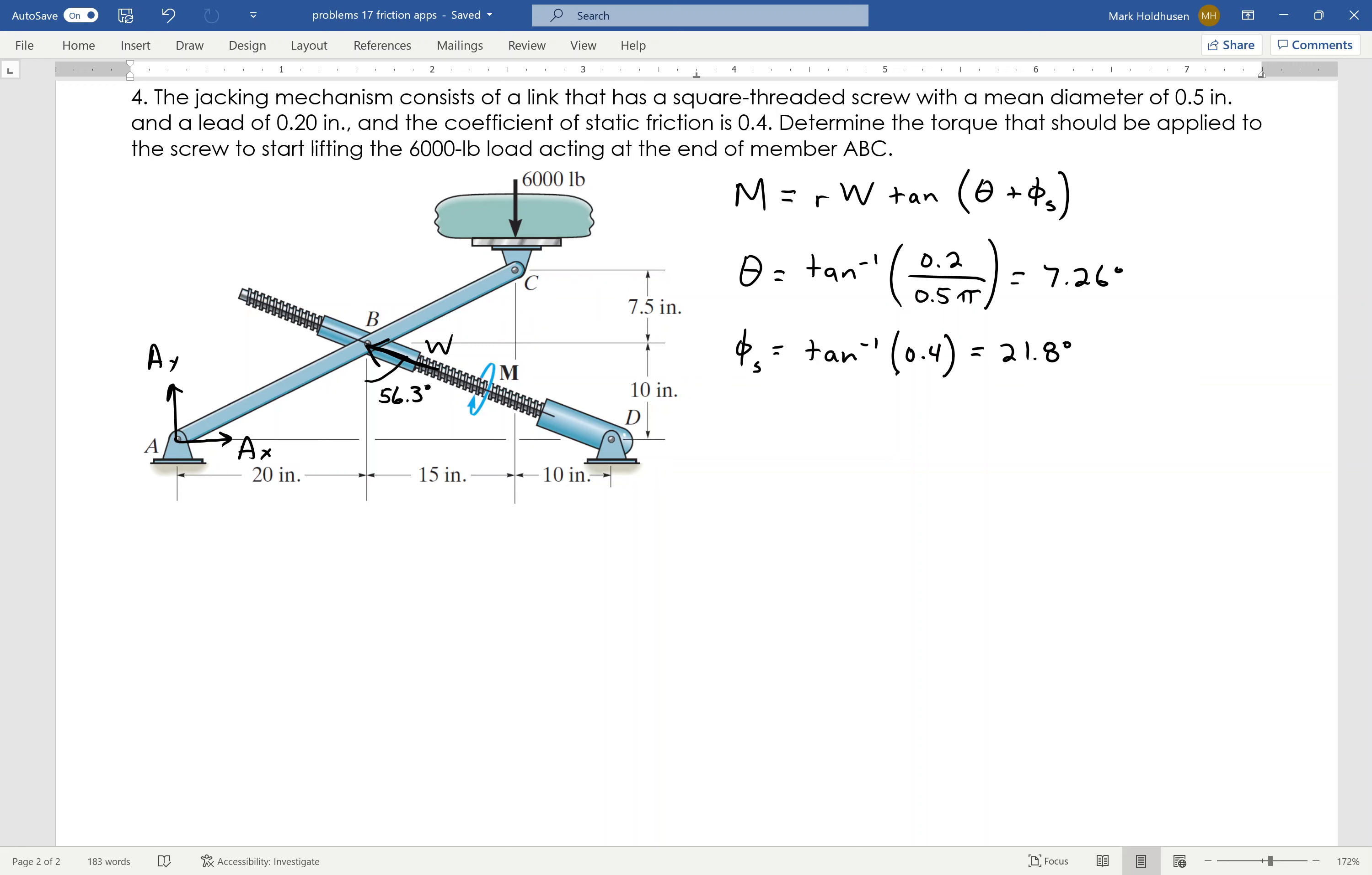Now, I'm looking for W. I know 6,000. I don't care at all about A_x and A_y. Therefore, I'm going to sum my moments about point A.